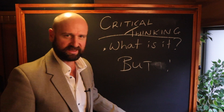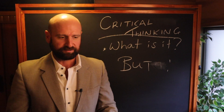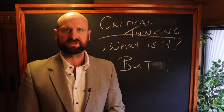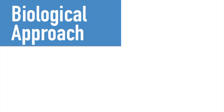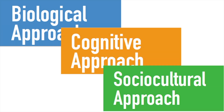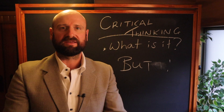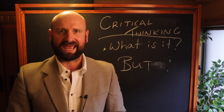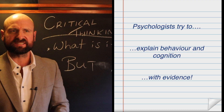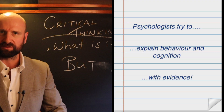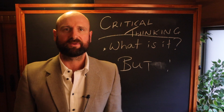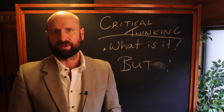Let's break that down. Let's take the three core approaches in IB psychology: we have the biological, cognitive, social, and cultural. The key of a psychologist is to explain behavior and cognition — how and why do we think and act the way we do? We need our studies and our evidence to support our explanations.